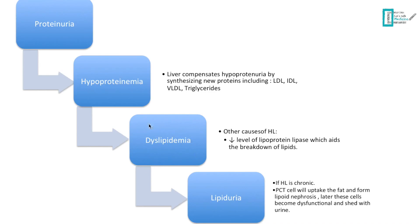If dyslipidemia is left untreated, the patient will develop lipiduria — the presence of lipid in the urine. Because lipid is being filtered into the urine, the proximal convoluted tubule cells will start to ingest or uptake the fat from the tubules. Then we will have what is called lipoid nephrosis — basically vesicles filled with lipid inside the PCT cells. If this continues, these cells will be dysfunctional and shed with the urine.